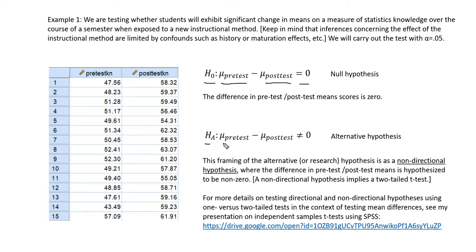The alternative hypothesis here is stated as μ at pre-test minus μ at post-test is not equal to 0. So we're stating that our pre-test mean is not equal to the post-test mean, and that would signal that there is a change in statistics knowledge over time. So let's go ahead and open up SPSS and run our analysis.